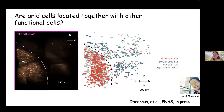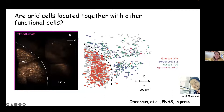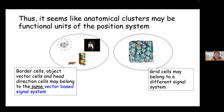What can we use this for? We can ask questions such as where the different functional cells are located within the entorhinal cortex. Here is an example by Horst Obenhaus who collaborated with others. In this area of the brain — the medial entorhinal cortex — you see many grid cells, but to the right side of this border you see other functional cells: border cells, head direction cells, and egocentric cells. It seems these different functional cells are located at a different place from the grid cells — suggesting the border cells may belong to a vector-based signal system, while grid cells belong to a different system.